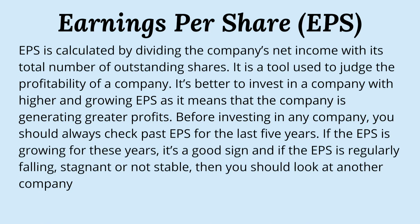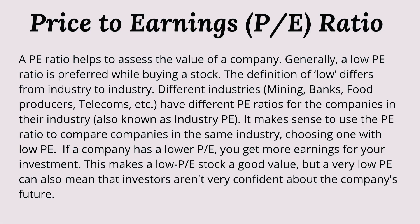One important financial ratio is earnings per share, abbreviated EPS. EPS is calculated by dividing the company's net income by its total number of outstanding shares. You wouldn't have to do this calculation yourself because the websites I mentioned give these numbers already. It is a tool used to judge the profitability of a company. It is better to invest in a company with a higher and growing EPS as it means the company is generating greater profits every time. Before investing in any company, you should always check past EPS for the last five years or so and check if it is growing. If it is growing, that's a good sign. If the EPS is falling, stagnant, or not stable, then perhaps you should look at another company.